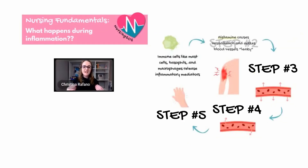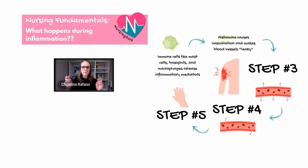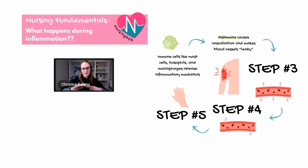One of these inflammatory mediators is called histamine — you might have heard of it already. Histamine is released by mast cells and basophils when there is a tissue injury or an allergic reaction. Histamine goes into the tissues, causes vasodilation in the blood vessels, and makes the blood vessels become leaky — what's called capillary leak — where fluid moves out of the blood vessel into the surrounding tissues.